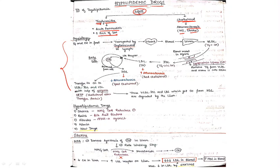Hypolipidemic drugs are categorized into five categories. The first and most important group is statins. The second is resins, the third is fibrates, the fourth is niacin, and there are some newer drugs as well. Statins are the most important category.